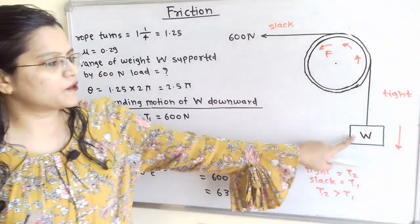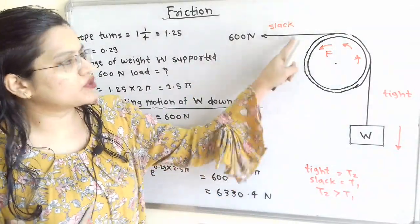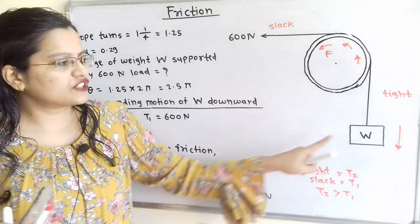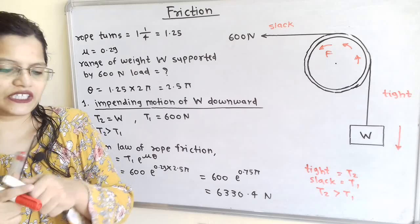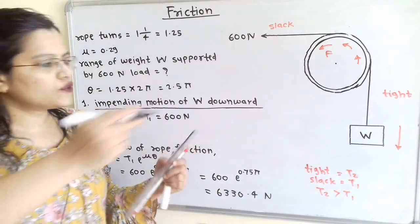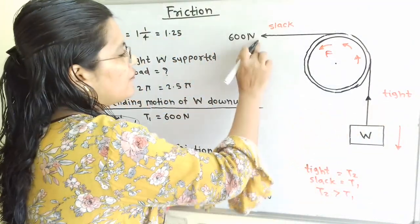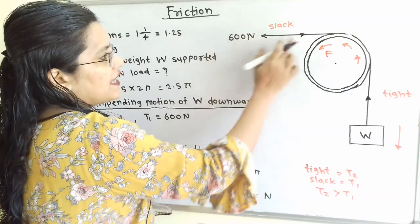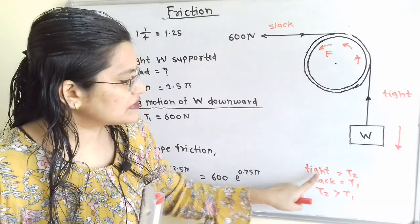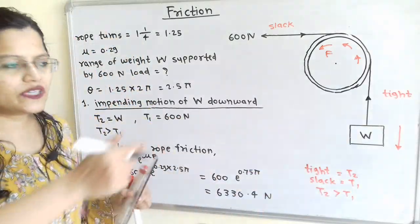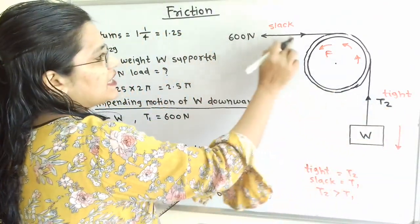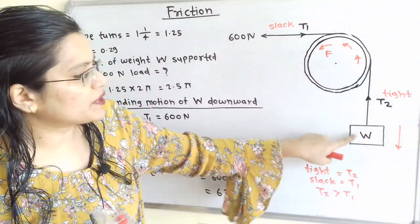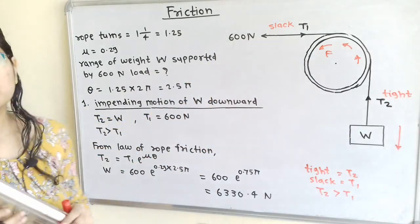From the diagram, load W and the 600 N force are both connected to the rope. Since the rope is inextensible, tension is in the outward direction from both loads. For the tight side (load W), the tension is T2, and for the slack side (600 N force), the tension is T1. Therefore, T2 = W and T1 = 600 N.